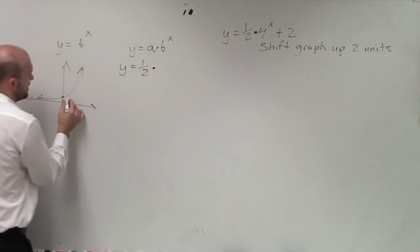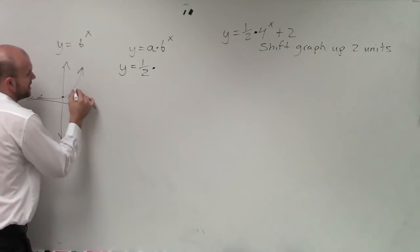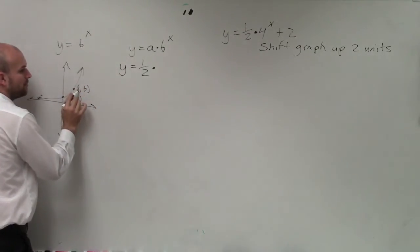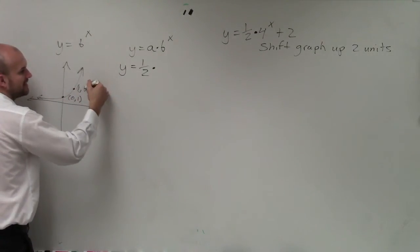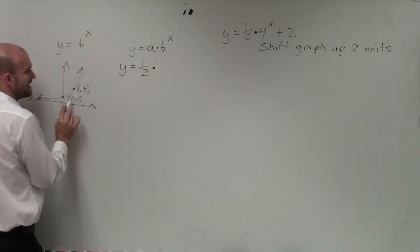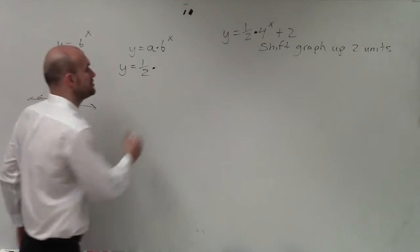Because remember, here I have my point, which is 0 comma 1. And then my next point is 1 comma b. So if I plug in 1, I know that I'm going to get out b. But that's only when it's in the form of b to the x. But my two points I notice for x are still going to be 0 and 1. I'm going to want to use those points again.